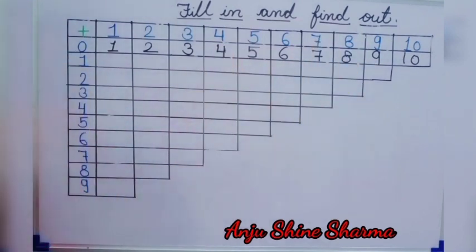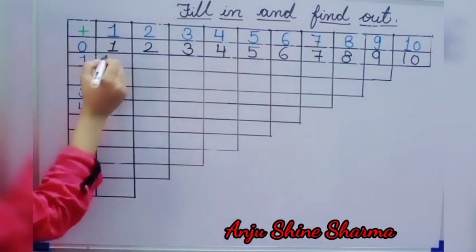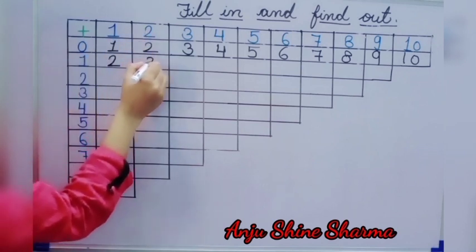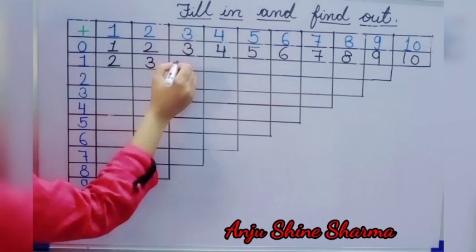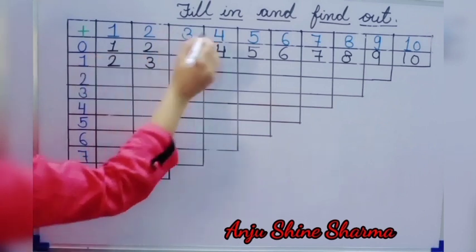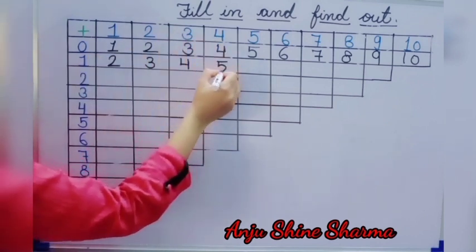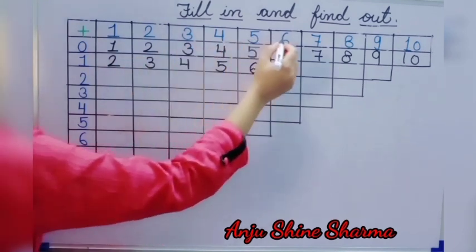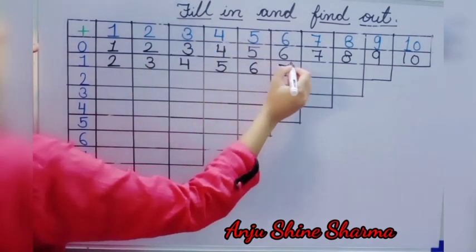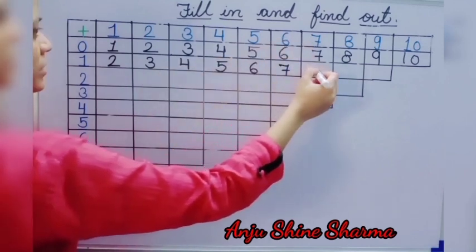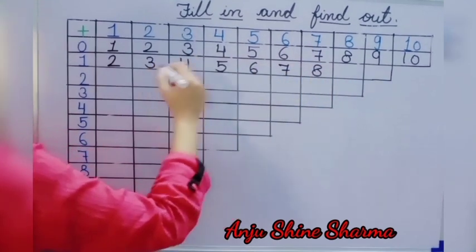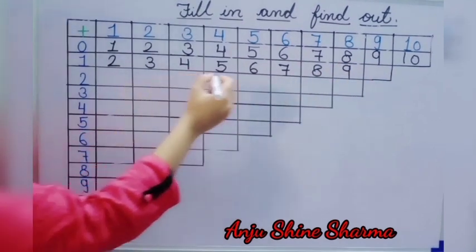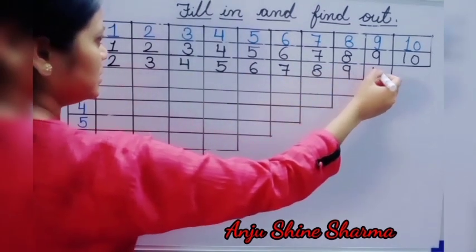Then we add 1. 1 plus 1 is 2. Then 1 plus 2 is 3. 1 plus 3 is 4. 1 plus 4 is 5. 1 plus 5 is 6. 1 plus 6 is 7. 1 plus 7 is 8. 1 plus 8 is 9. 1 plus 9 is 10.